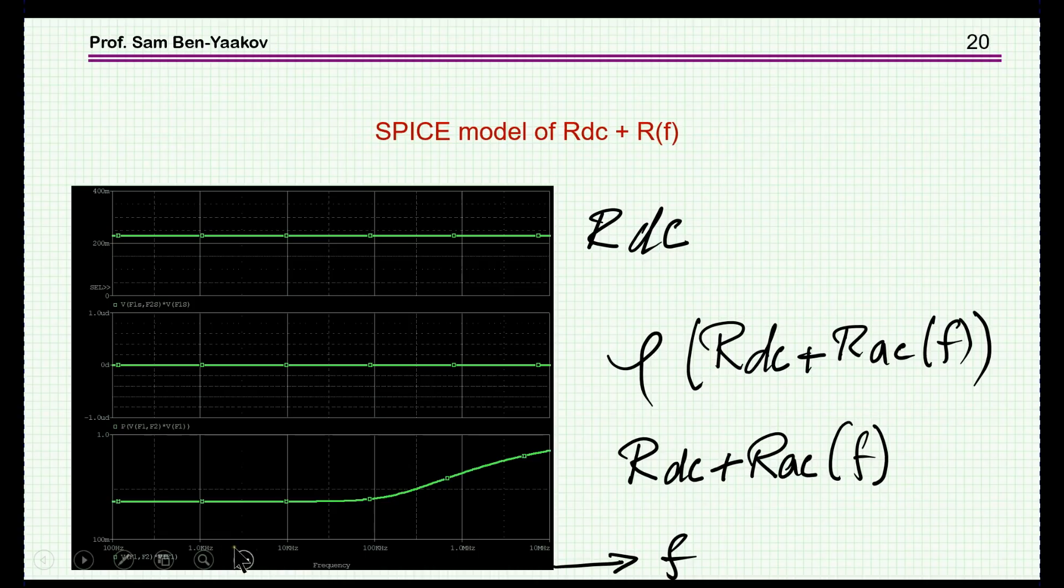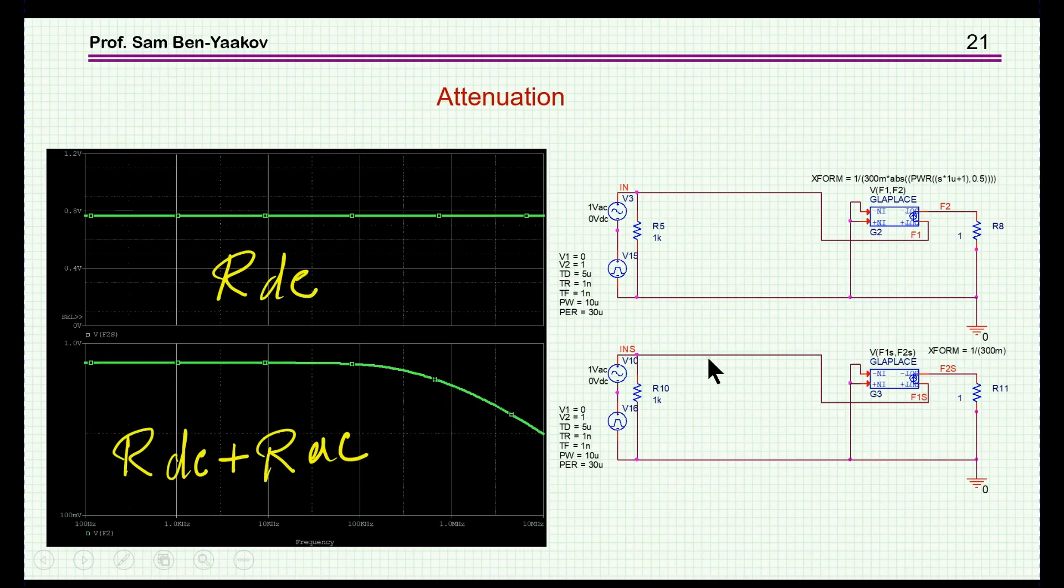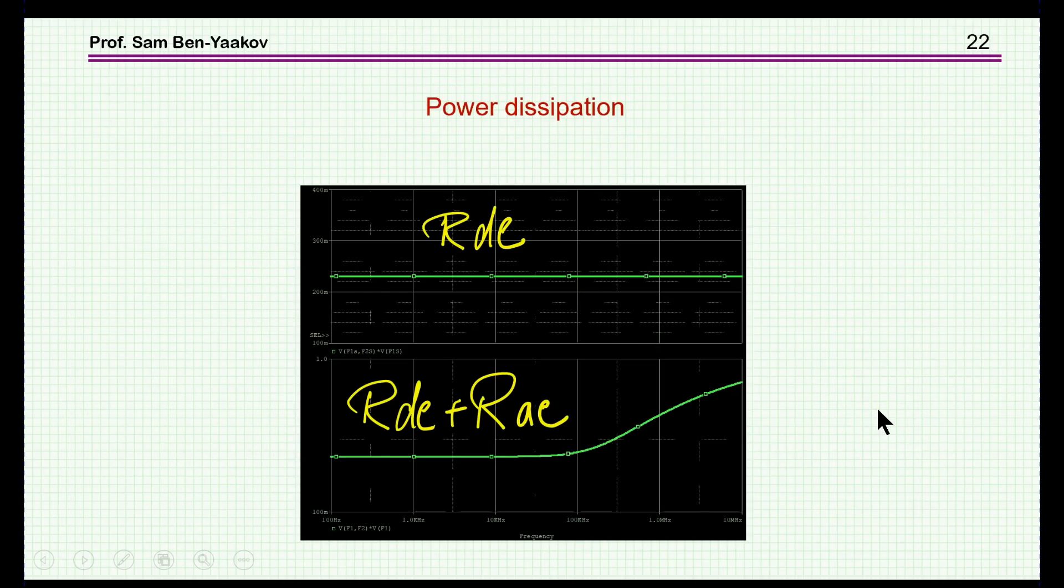If we look at a voltage divider between here and here with a one ohm resistor, you see there's attenuation at high frequency because this RAC is becoming larger, and therefore the attenuation is increasing. While in the case of the RDC, there's no change because this is a fixed resistor. We can also look at the power dissipation. For one amp, you see that for RDC the power dissipation is not frequency dependent, while here since the RAC is going up, it's frequency dependent.